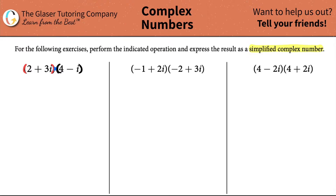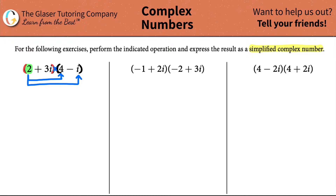I like to call it the 'play fair' method — everybody in math has to play fair. Working left to right, I start with the first parentheses. The two, the first term, has to be multiplied by the four, but you have to play fair and multiply by all possibilities. So two also needs to be multiplied by negative i. Then you go to the next term, plus three i — it wants to be multiplied by four and also by the i. You can only go from one parentheses to the other.